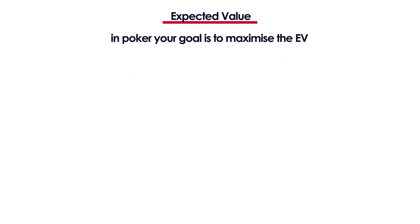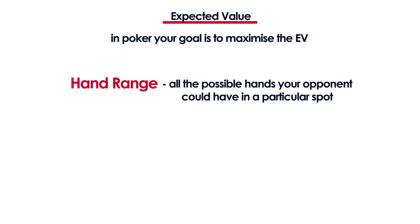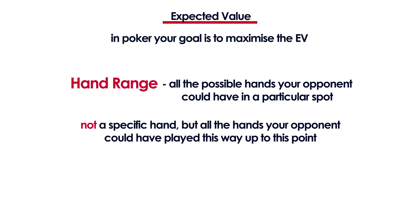In poker your goal is obviously to maximize the expected value, as you want to maximize your profits and minimize your losses. We'll go over an example of a hand in a minute, but let's first talk about hand ranges. Whenever you're playing a hand you should always think about what your opponent could be holding in that spot. You shouldn't try to put him on a specific hand like 'I'm sure he has aces so I'm gonna fold.' You always have to think about all the possible hands your opponent could play up to this point — that is his range of hands.